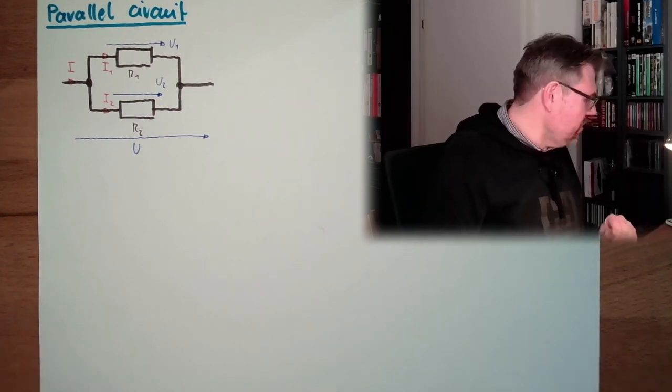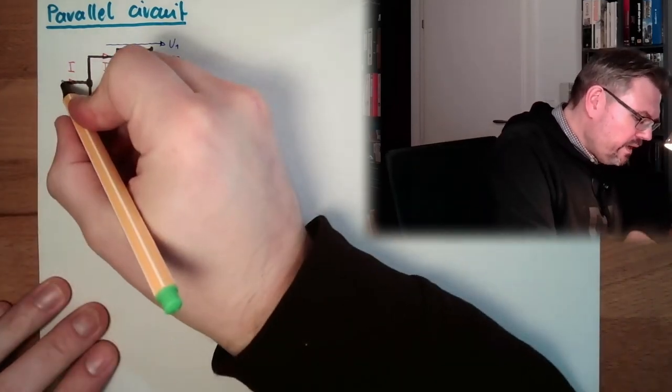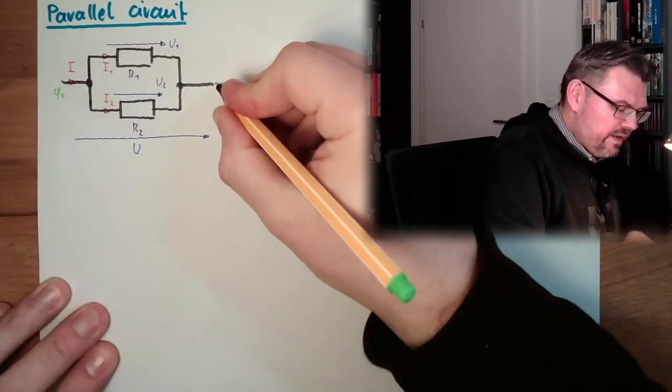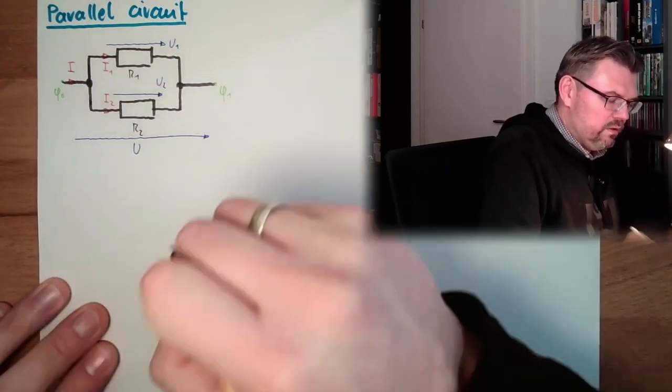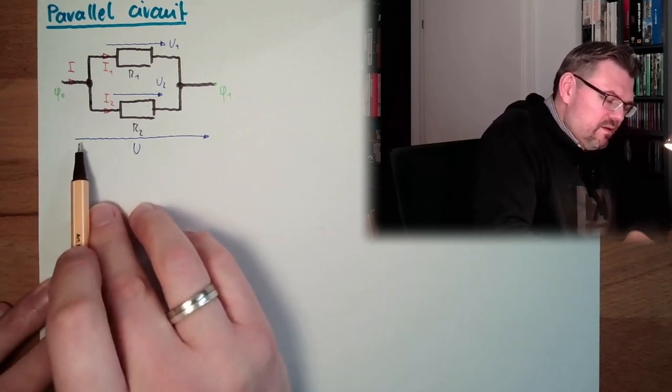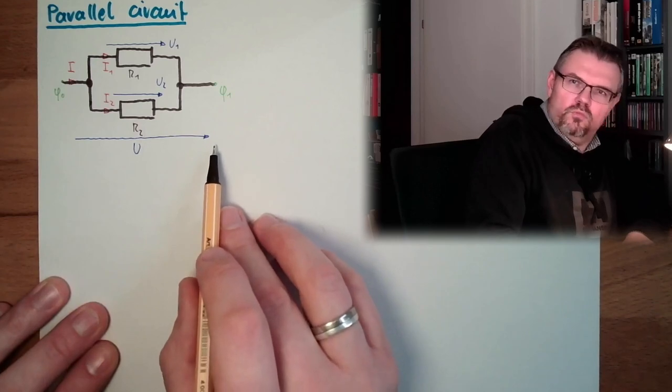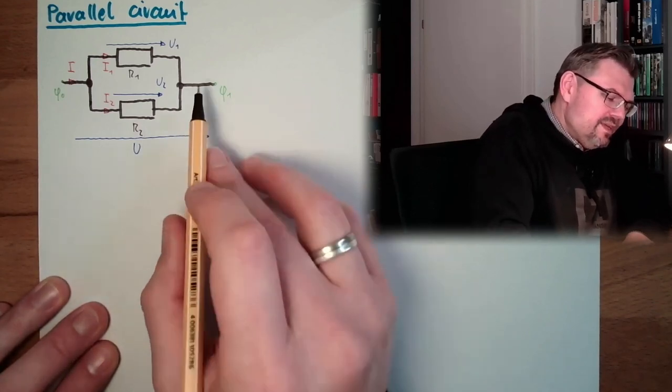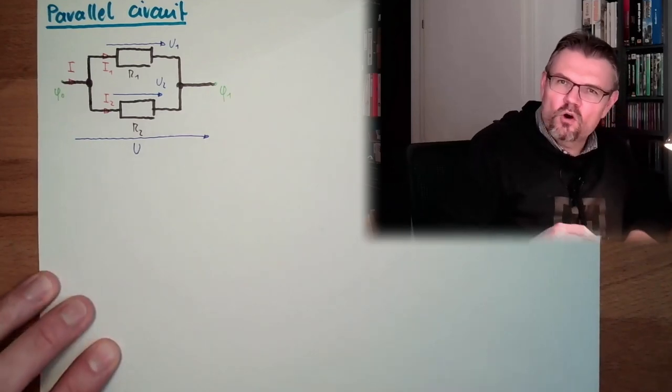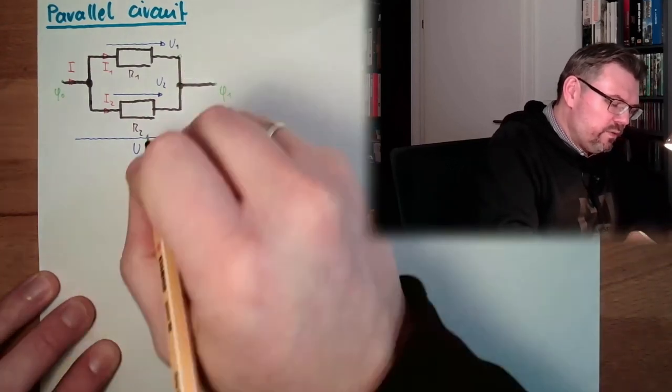Now we can do the following. We can think what potential would be here. I have the potential V0, I call it V0, and here we have the potential V1. So the voltage between V0 and V1 is called U, potential difference. Since there's connections, we said these connections are ideal, there is no potential difference.